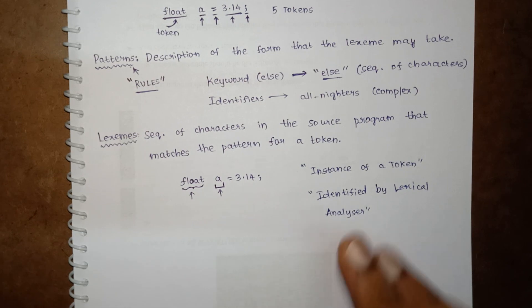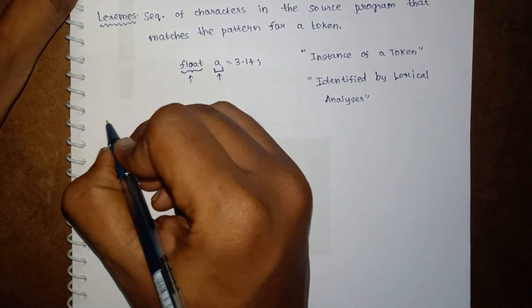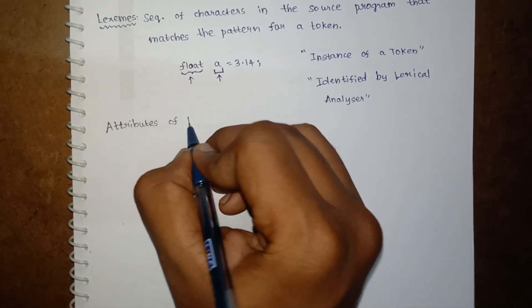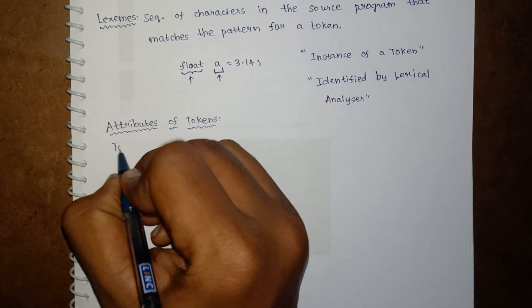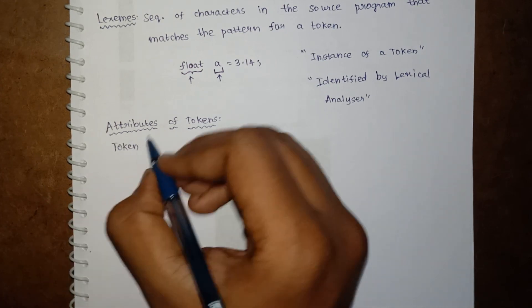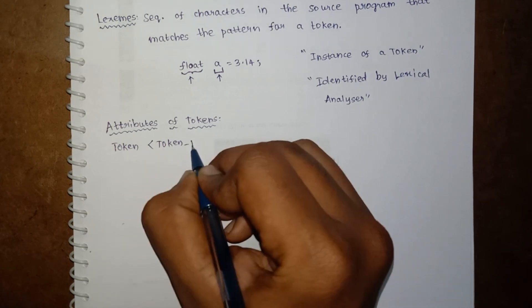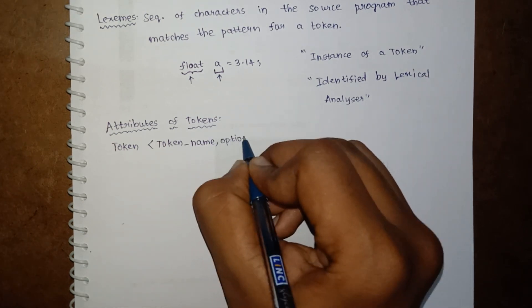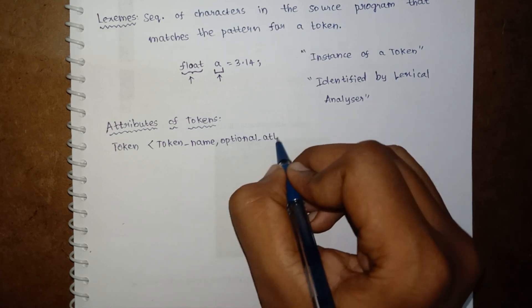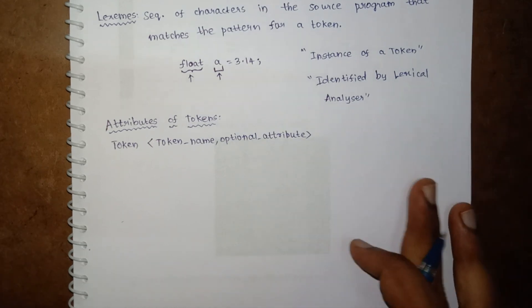And finally, we are going to understand about attributes of tokens. Token usually consists of a pair which consists of token name and an optional attribute. This optional attribute generally is a pointer which points to the symbol table.